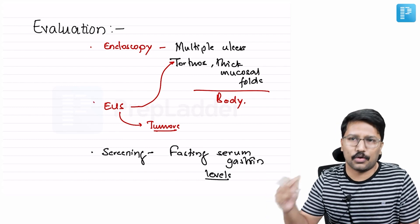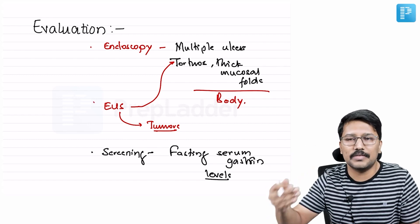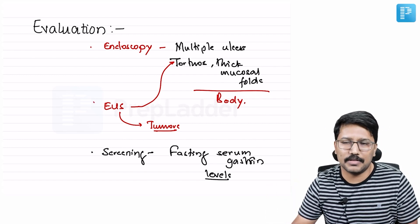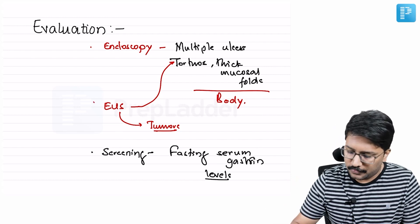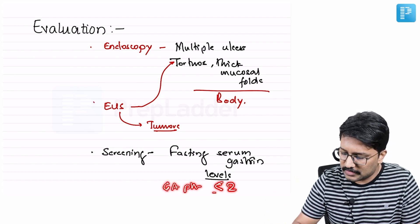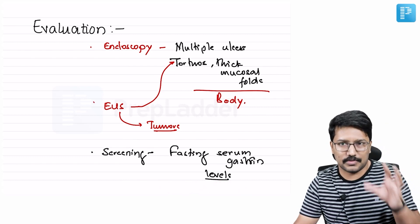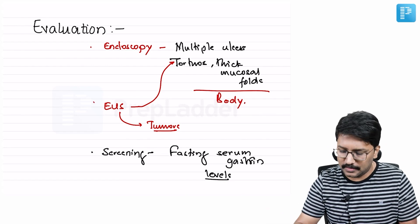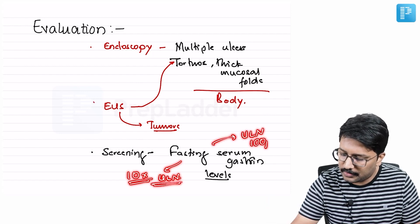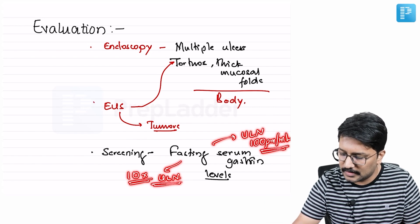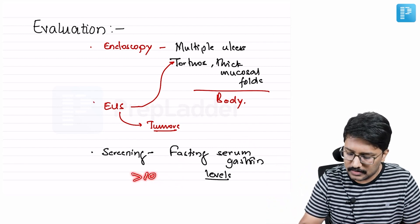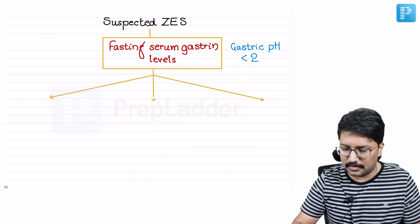For example, in chronic atrophic gastritis secondary to H. pylori or autoimmune gastritis, gastrin levels may be increased secondary to atrophy and achlorhydria. If you just depend on serum gastrin levels alone, you may misdiagnose patients. So you do fasting gastrin levels and gastric acid pH. When pH is less than 2, it is more in favor of Zollinger-Ellison syndrome. Fasting serum gastrin levels more than 10 times the upper limit of normal — for most labs that is 100 picograms per ml — so more than 1000 picograms per ml is where you strongly consider ZES.